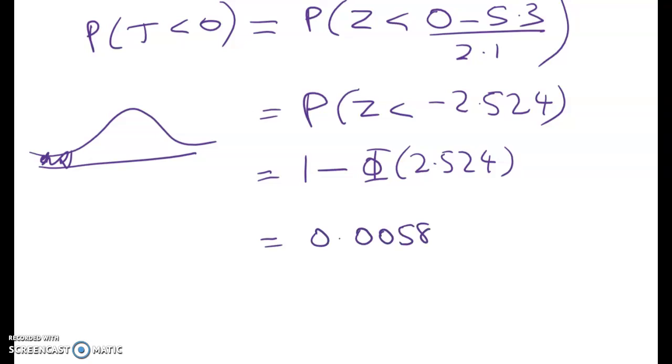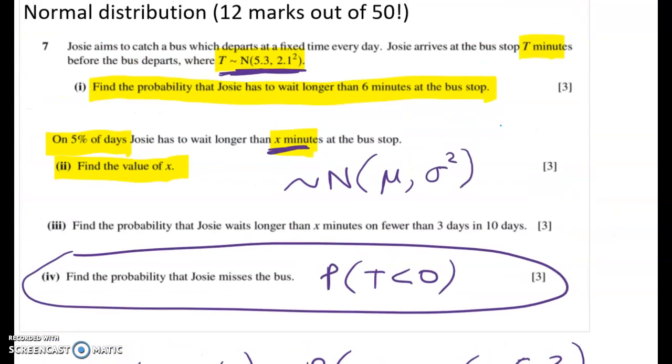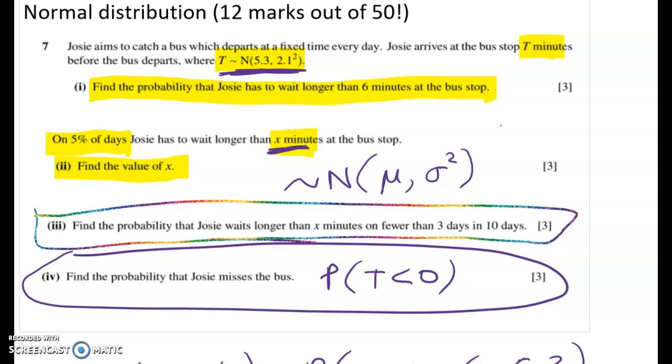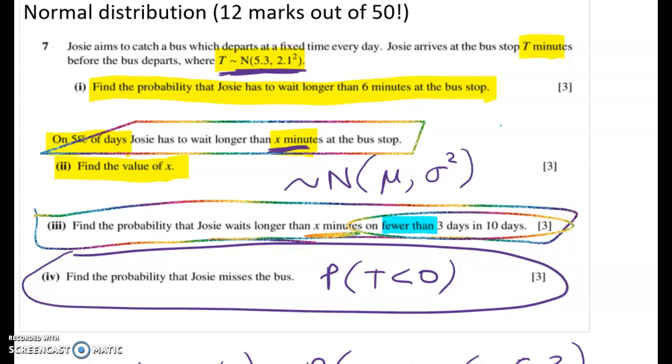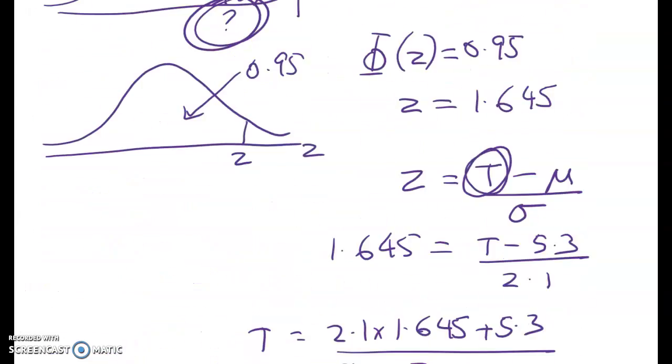Now the last part of this question I'm doing is the most interesting and it's where we start out with a normal problem. Okay so this one here find the probability that she waits longer than x minutes on fewer than three days in 10 days. So what I've got going on here is that in this part we were told that on five percent of the days she's got to wait longer than x minutes. And then in this bit here I'm counting fewer than three days out of 10 days. So this is a binomial problem.